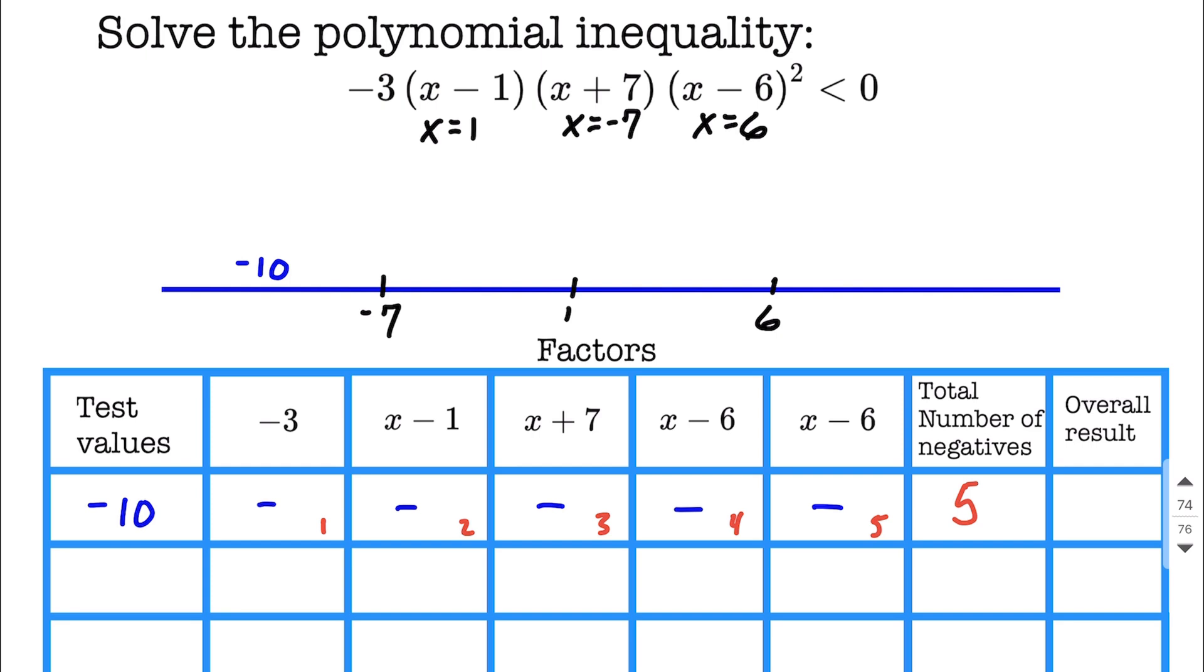Now let's count up how many total negatives did we get when we tested negative 10. Well, 1, 2, 3, 4, 5. So 5 total negatives. What that means is, if we have 5 negatives multiplied together, that's an odd number of negatives, and the overall result is going to work out to be negative. So I'm going to go ahead and say, in this portion of my number line, it's overall going to be negative.